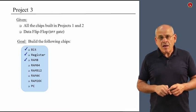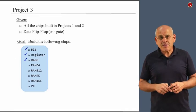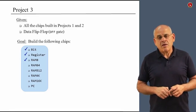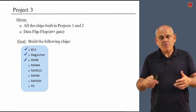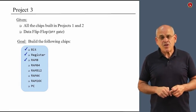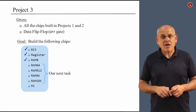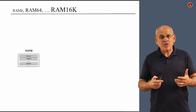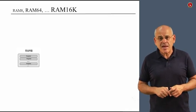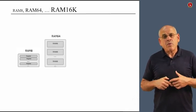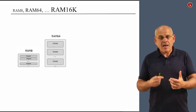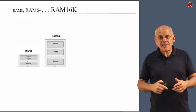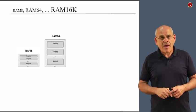Moving along, we have implemented the first three chips and we are ready to construct the more elaborate RAM64, 512 and so on chips in the hierarchy. So this is our next task and here is how we do it. We start with the RAM8 chip that we just discussed. And we stack together eight such RAM chips and what comes out is what we call a RAM64.